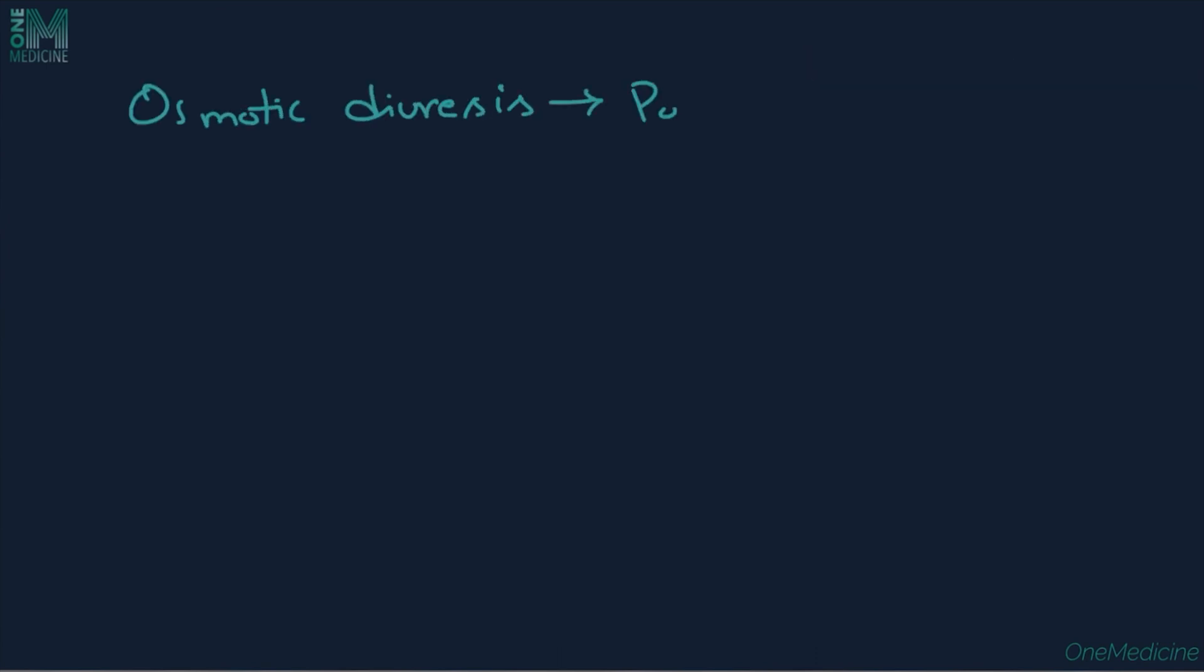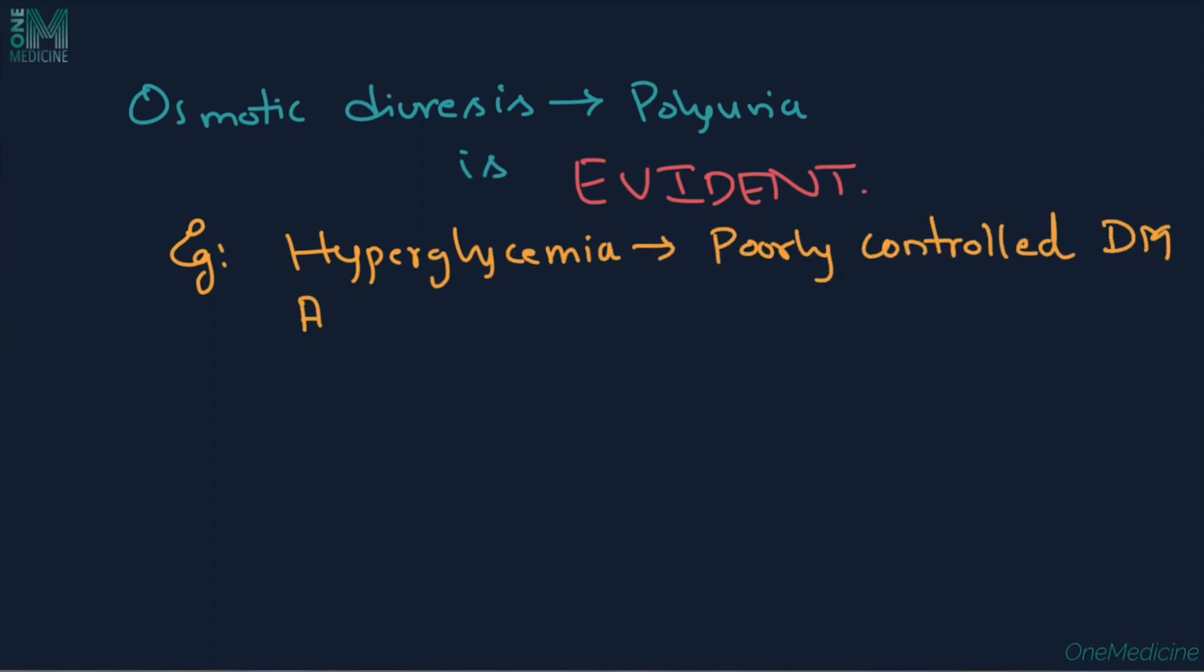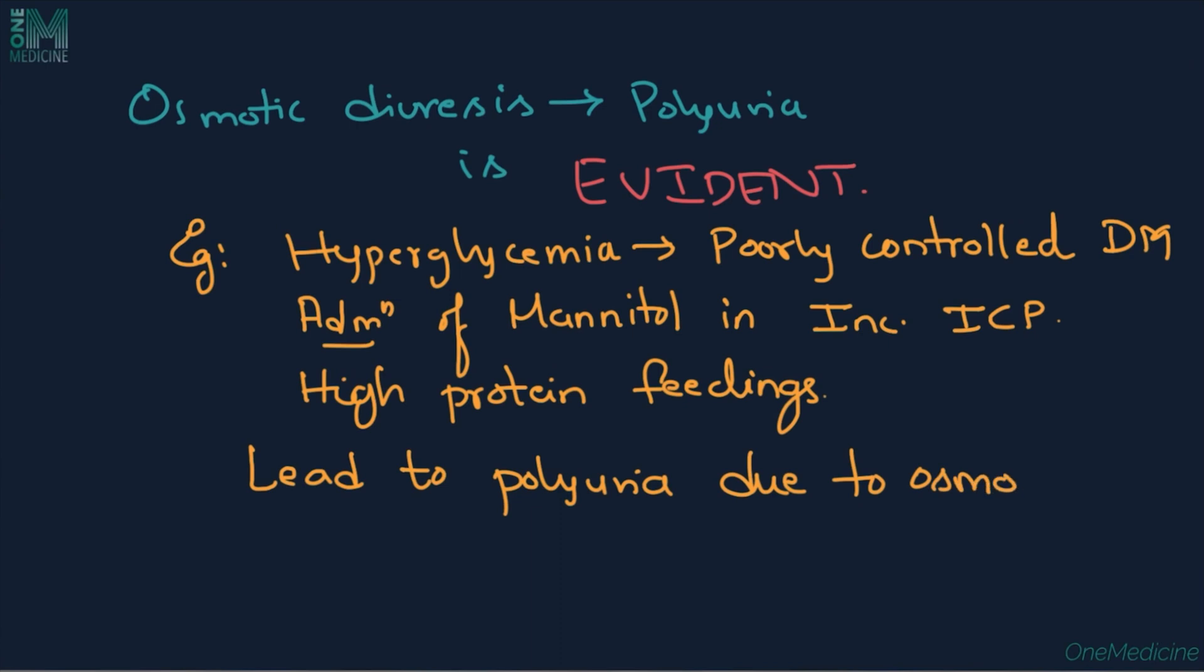Osmotic diuresis causing polyuria is often evident. Poorly controlled glucose levels in a patient with diabetes mellitus, administration of mannitol to a patient with increased intracranial pressure, and high protein feedings are all examples in which polyuria is a result of osmotic diuresis.